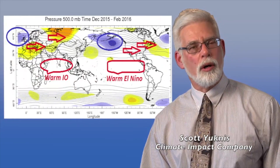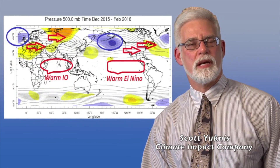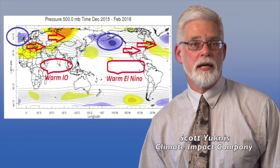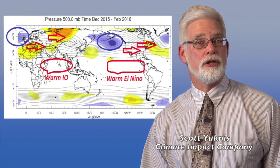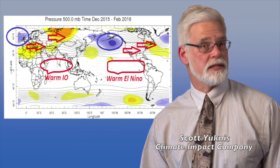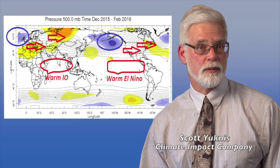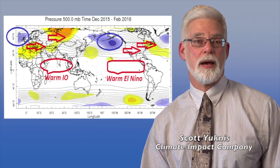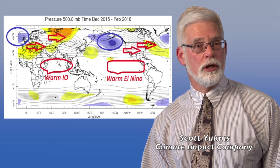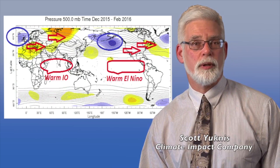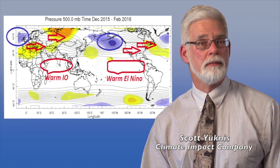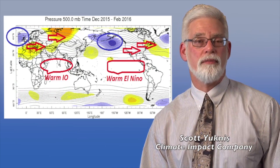Correlating sea surface temperature anomalies to the upper air pattern is what we try to do to make a seasonal forecast. We can take a look at this past winter season and we see good correlation between the sea surface temperature anomaly pattern and the upper air features.